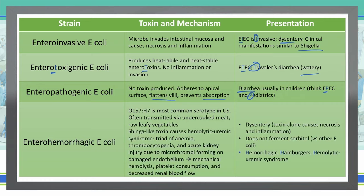Entero-hemorrhagic E. coli, or EHEC, is the one most often discussed when we talk about E. coli and GI infections. O157H7 is the most common serotype, coming most commonly from undercooked meats and raw vegetables. The Shiga-like toxin can create hemolytic uremic syndrome, or HUS, which has a triad of anemia, thrombocytopenia, and acute kidney injury.